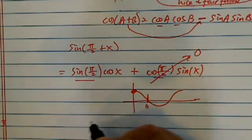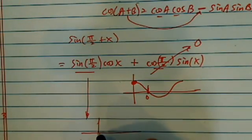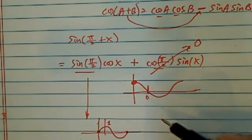And then our sine curve here, let's draw the sine curve. Sine curve is very ordinary, it starts from the origin. At pi over 2, it's 1.